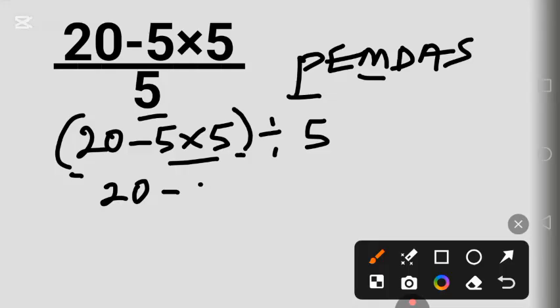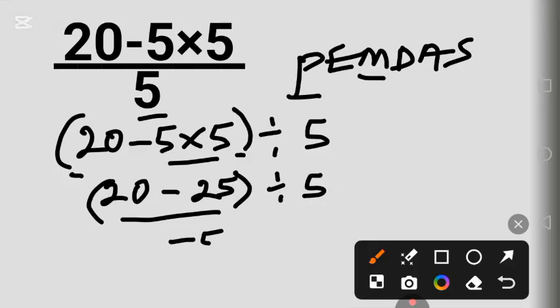Divide by 5. 20 minus 25 gives us negative 5, divided by 5. This stands for division. Negative 5 divided by 5 equals negative 1. This is the correct answer.